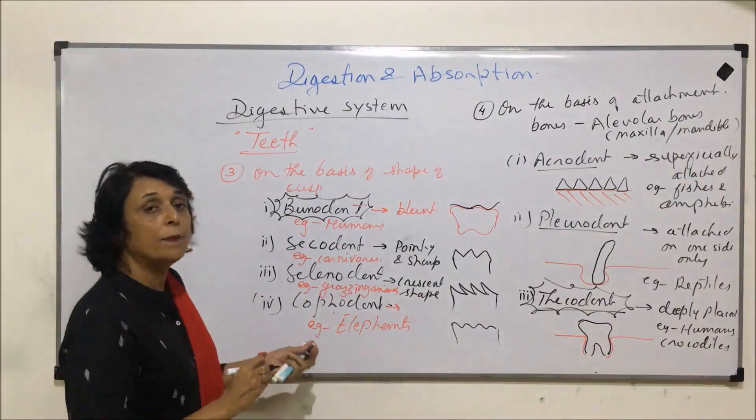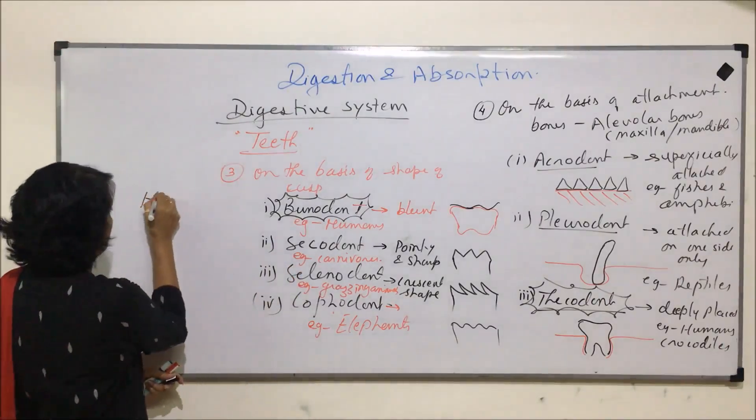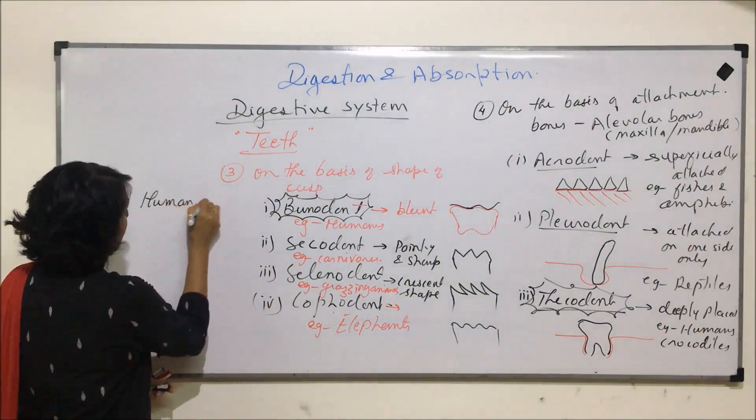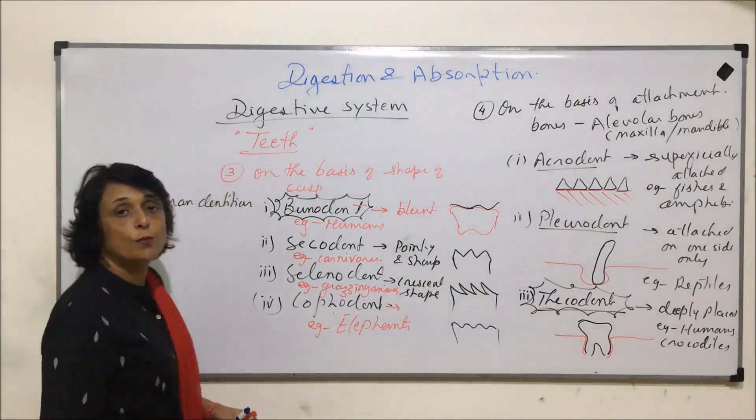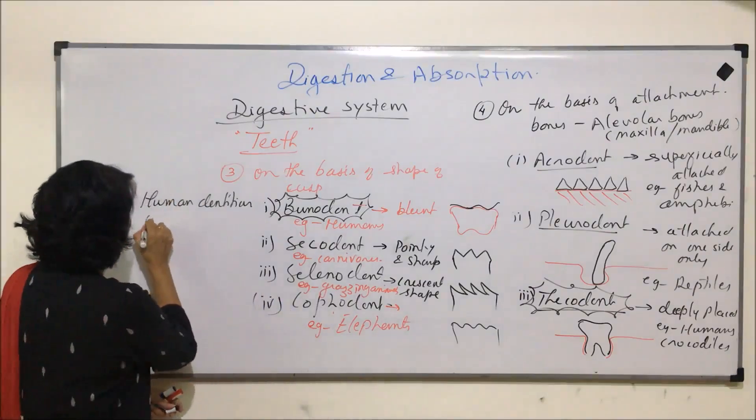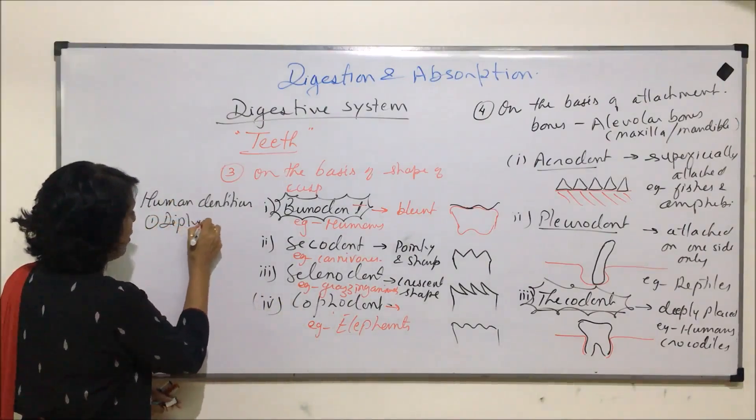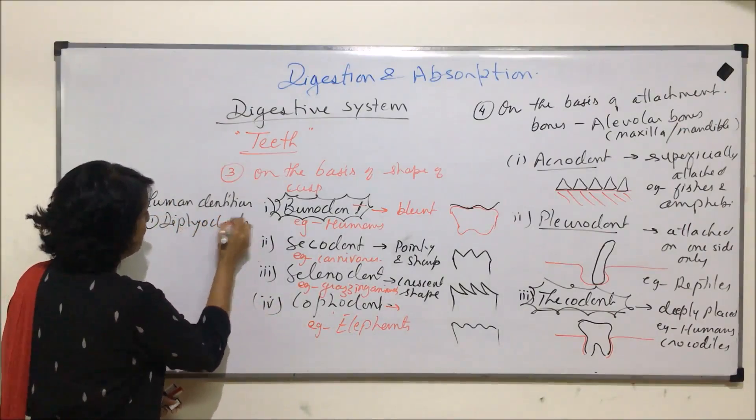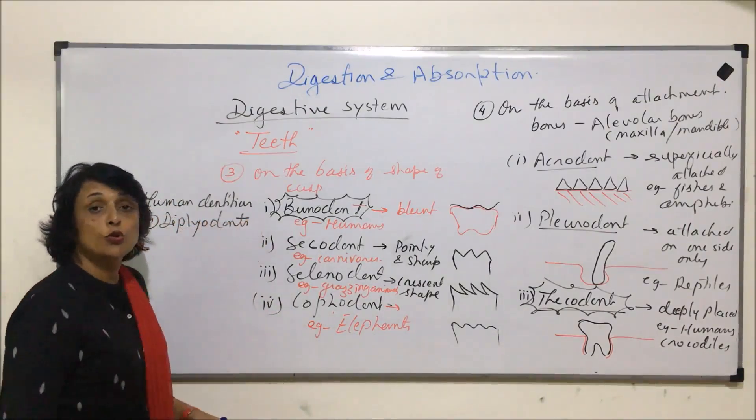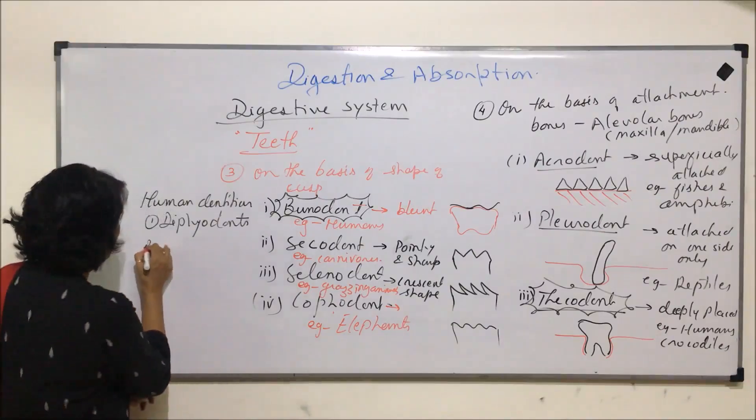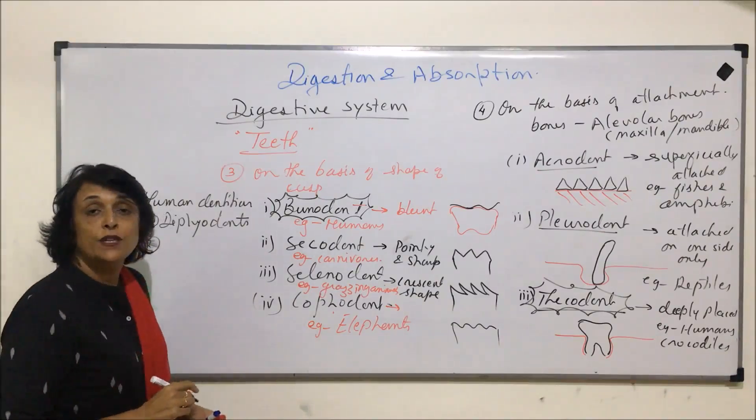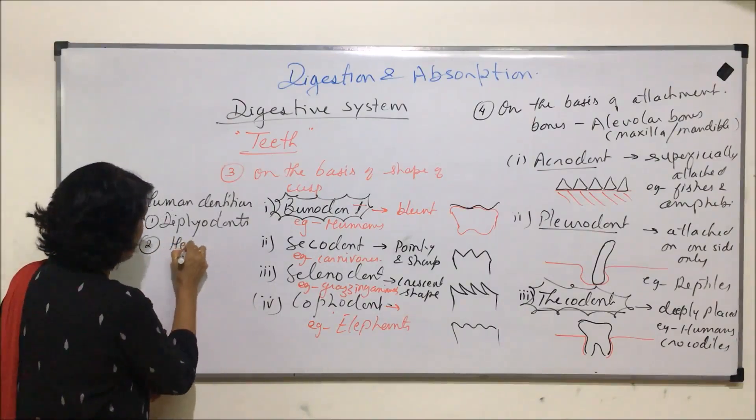If we have to sum up the human dentition, then the four terms which we are going to use. One is diphyodont. That means we have two sets or we get two sets of teeth in our lifetime. The types of teeth are different, so heterodont.